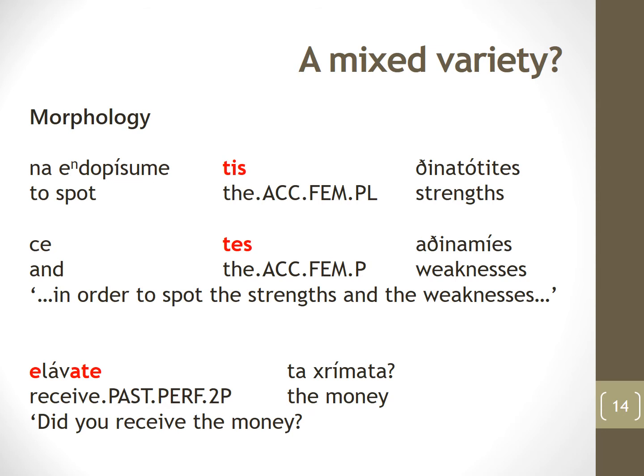We find similar mixing in morphology. A speaker uses tis and then tess for the definite accusative feminine plural determiner — the first standard-like, the second Cypriot. We also see lexical mixing: a speaker uses e-, the dialectal past tense marker, alongside the ending -ate, which is the Standard Greek past tense ending, rather than the expected Cypriot Greek ending -ete.